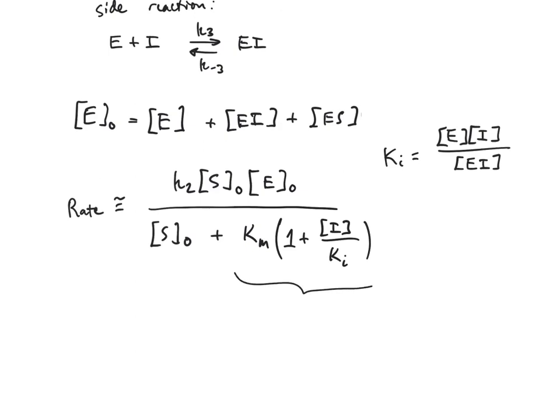And so now, if you take a look at this term, if we just call that Km star, that is actually a new Michaelis constant. And we can plug it right into the original Michaelis-Menten equation. So that's the effect that an inhibitor has. It changes that Michaelis constant, and it's going to result in a slower rate overall.